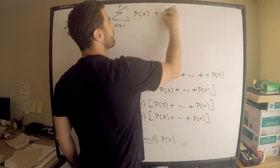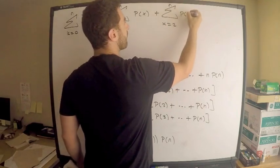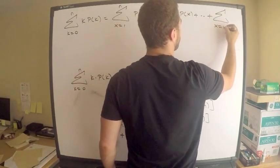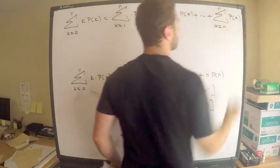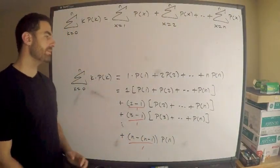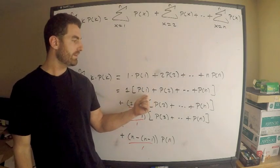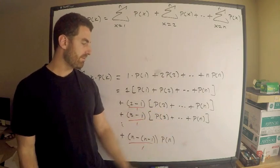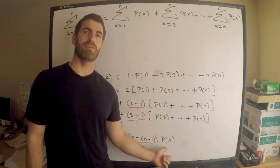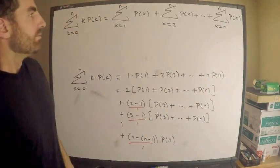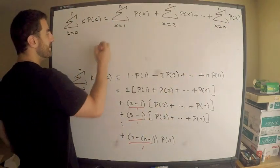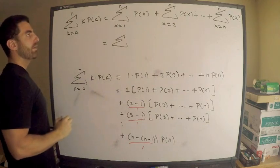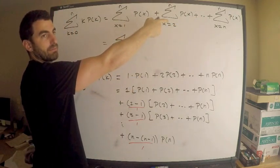Plus the sum x equals 2 to n probability x. Plus the sum from x equals n to n probability x. Hopefully you see what just happened here. This is the sum from x equals 1 to n of probability x. This is the sum from x equals 2 to n of probability x. The sum from x equals 3 to n probability x. This is the sum from x equals n to n of probability x. I mean, that's just obviously probability n. Now what? Well, this is equal to the sum. Now, I want to add these up. I mean, this itself, this is the sum of sum of sums.